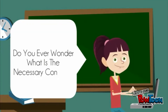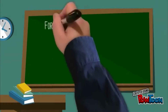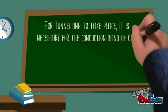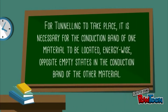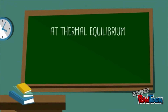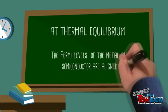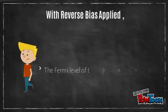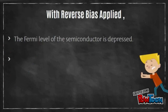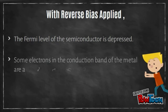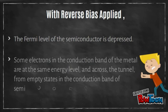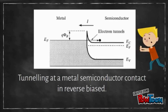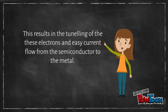Do you ever wonder what is the necessary condition for tunneling to take place? For tunneling to take place, it is necessary for the conduction band of one material to be located energy-wise opposite empty states in the conduction band of the other material. At thermal equilibrium, the Fermi levels of the metal and semiconductor are aligned. With reverse bias applied, the Fermi level of the semiconductor is depressed so that some electrons in the conduction band of the metal are at the same energy level and can tunnel across to empty states in the conduction band of the semiconductor. This can be shown in this figure, resulting in easy current flow from the semiconductor to the metal.